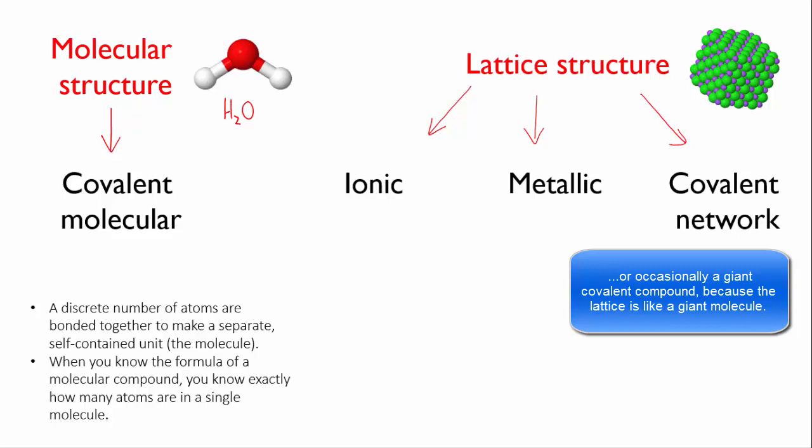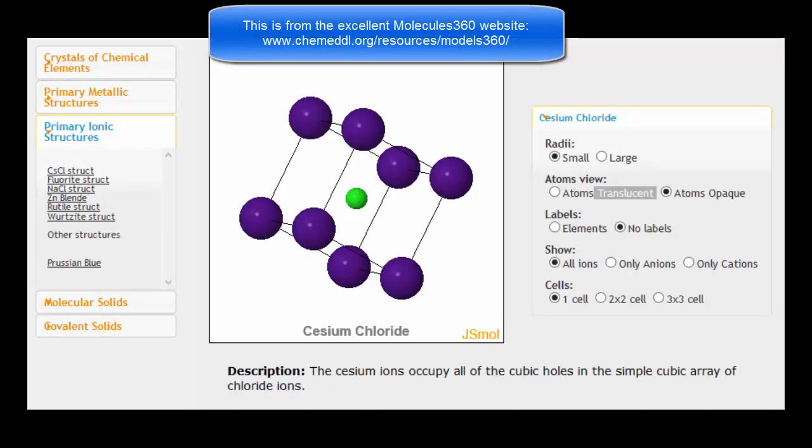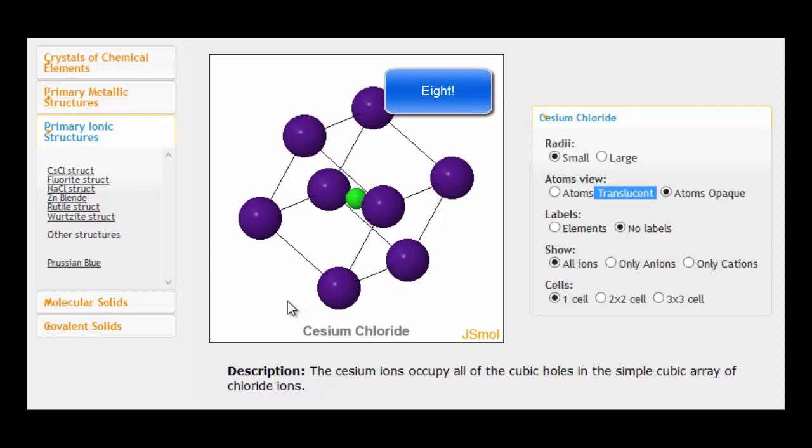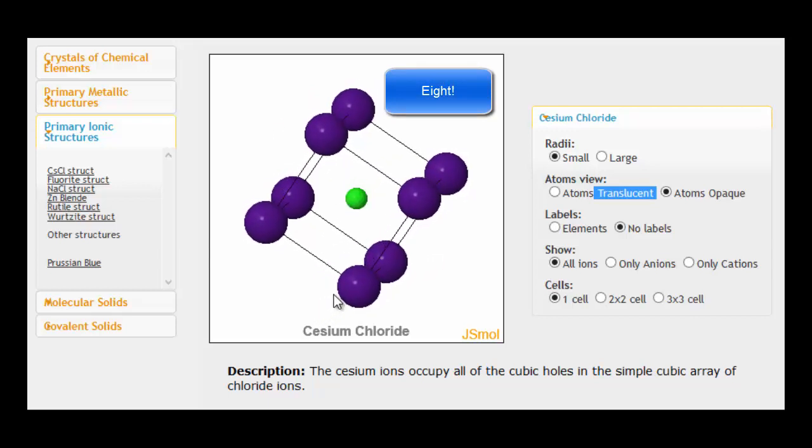So let's have a look at a couple of lattice structures. Here's an example of an ionic structure. This substance is caesium chloride, so the ratio is one caesium ion to one chloride ion. And you can see that we've got the chloride ion in the center here, and it's surrounded in a cubic arrangement by caesiums. You can twist and turn it around like that.